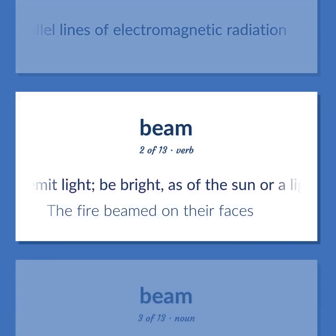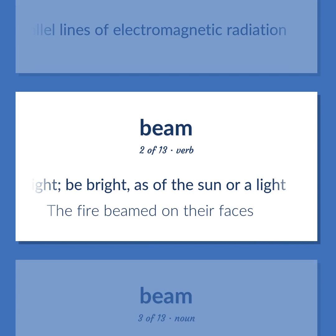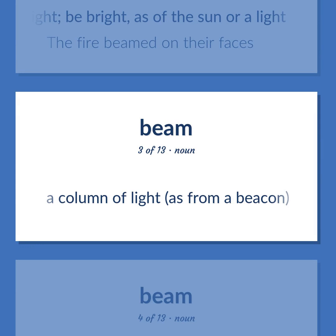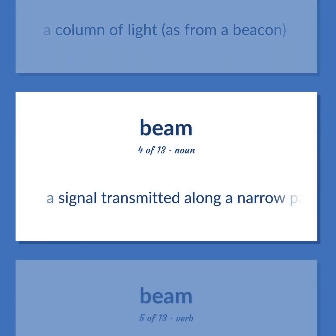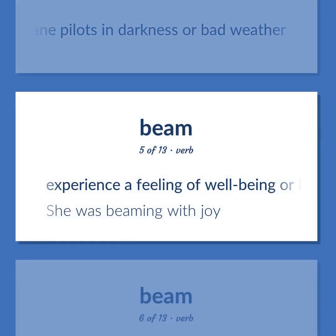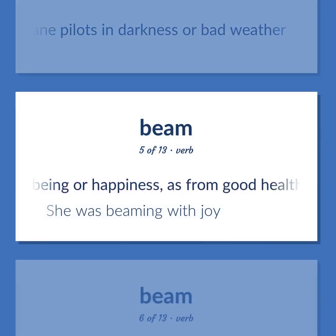Beam: Emit light; be bright, as of the sun or a light — 'The fire beamed on their faces.' A column of light, as from a beacon. A signal transmitted along a narrow path; guides airplane pilots in darkness or bad weather. Experience a feeling of well-being or happiness, as from good health or an intense emotion — 'She was beaming with joy.'